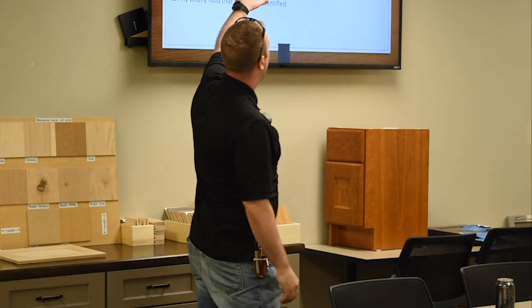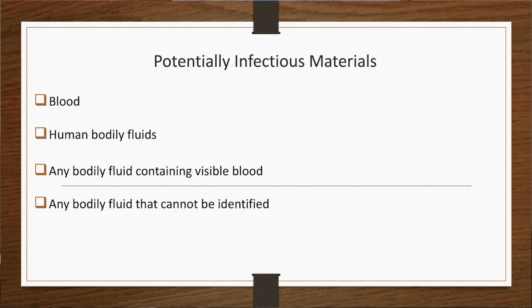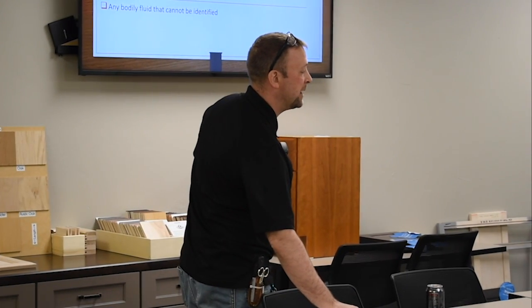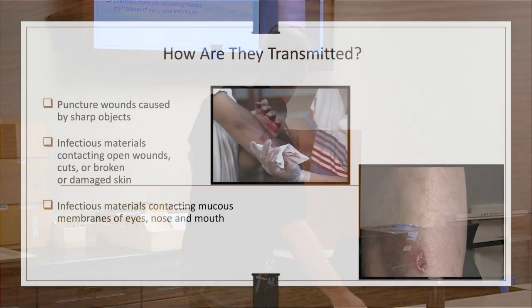But there are other blood-borne or bodily fluid-borne illnesses and viruses that can be transmitted besides those three. Let's talk about what are potentially infectious materials. Obviously blood. Body fluids that we can identify as body fluids. Anything containing visible blood. I'm coughing and spitting. I'm spitting out blood. Potentially infectious. And anything we just generally can't identify. Any type of body fluid that we can't identify or we think it is. Someone pukes, doesn't say anything, someone spits on the floor.